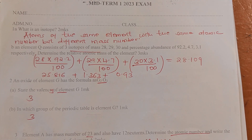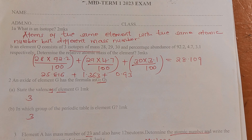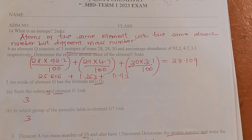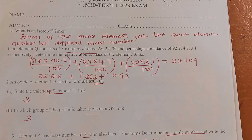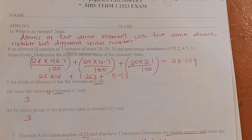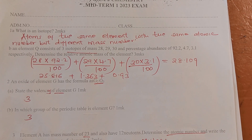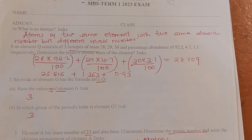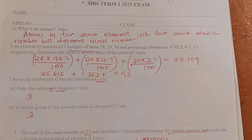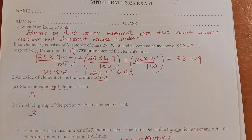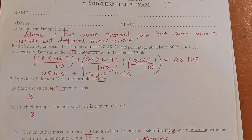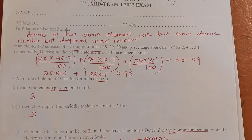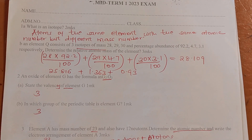To calculate the relative atomic mass, take (28 × 92.2/100) for the first isotope, (29 × 4.7/100) for the second one, and (30 × 3.1/100) for the third one, then find the average by adding those values. The result is 28.109.